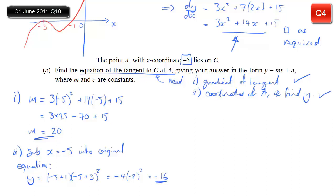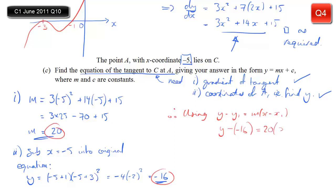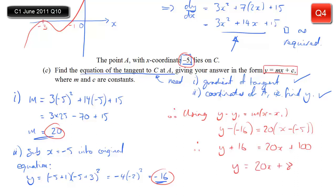With gradient 20 and point (minus 5, minus 16), using y minus y1 equals m(x minus x1): y minus (minus 16) equals 20(x minus (minus 5)), which gives y plus 16 equals 20x plus 100. Subtracting 16 gives the tangent equation y equals 20x plus 84.